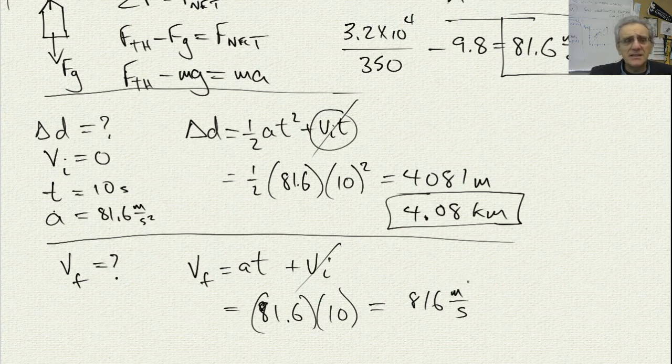Now, that really doesn't mean a lot to me, so I'd like to convert this into kilometers per hour. And if you remember, the conversion factor is 3.6, and kilometer per hour is the bigger number. So if I now go 816 times 3.6, I get 2,938 kilometers per hour.